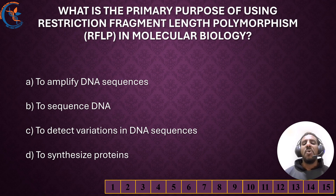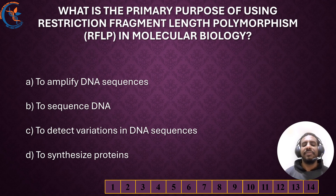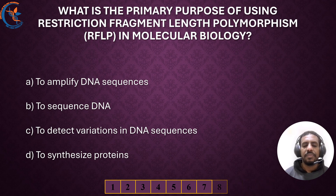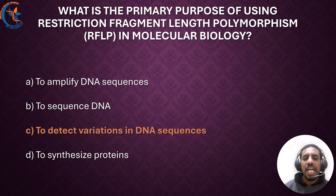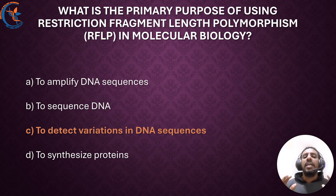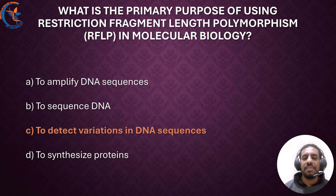The first question: What is the primary purpose of using restriction fragment length polymorphism in Molecular Pathology? RFLP is a technique used to identify variation in homologous DNA sequences by detecting different lengths of restriction enzyme-digested DNA fragments. So the correct answer is: to detect variation in DNA sequences.